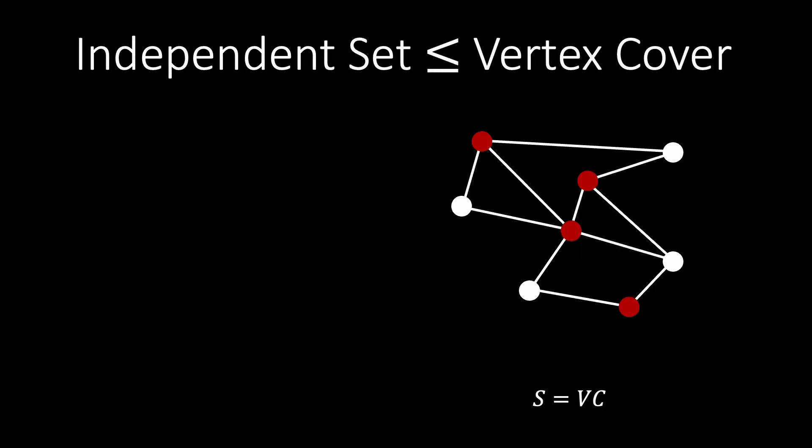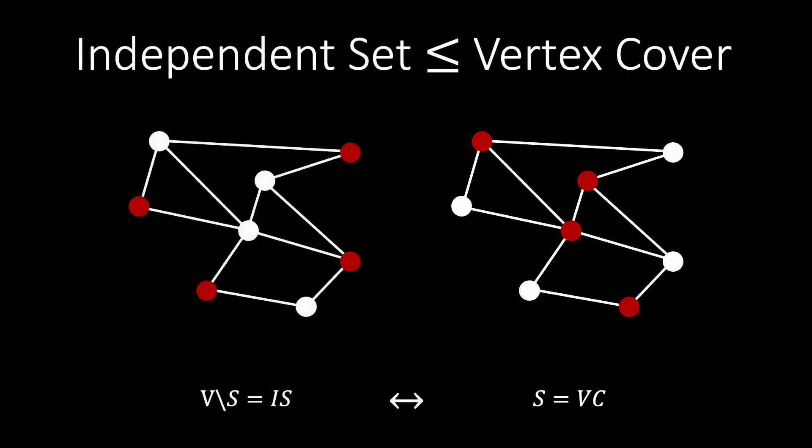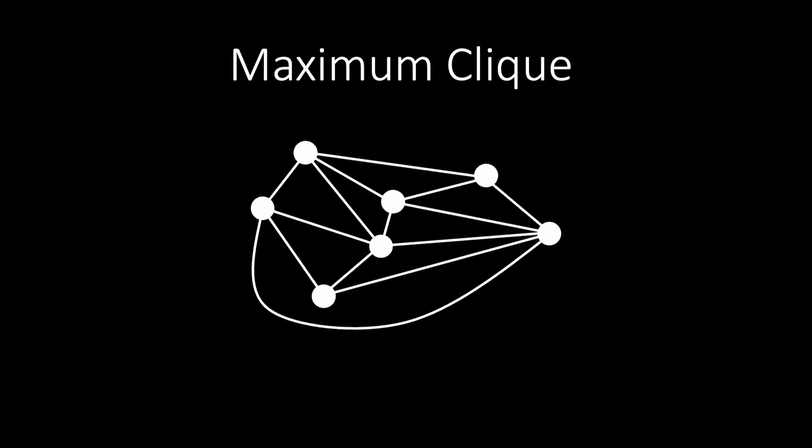The reduction also works the opposite way. If we have a vertex cover, then the complement of the vertices in the vertex cover forms an independent set. Because we can reduce the vertex cover problem to the independent set problem and vice versa, we know that they have the same difficulty.